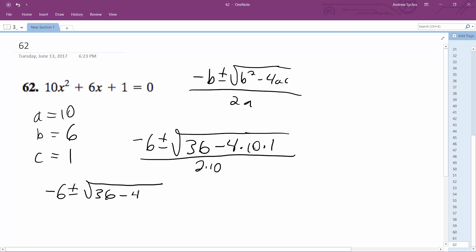So we get 36 minus 40 all over 20 is equal to negative 6 plus or minus the square root of negative 4 all over 20. This becomes negative 6 plus or minus 2i all over 20.